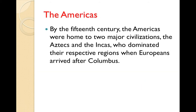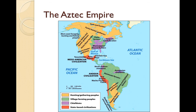Now we turn to the Americas. By the 15th century, the Americas were home to two major civilizations — the Aztecs and the Incas — who dominated their respective regions when Europeans arrived after Columbus. The Aztec Empire was in Mesoamerica, in the same location as the earlier Maya civilization, created by a people called the Mexica. The empire was created and maintained by conquest, and tribute from conquered peoples was a key feature of the Aztec economy. Aztec theology called for human sacrifice to replenish the power of the sun, with prisoners of war as sacrificial victims. Cities like Tenochtitlan were the center of a vast trade network, making the Aztecs the dominant civilization of Mesoamerica in the 15th century.